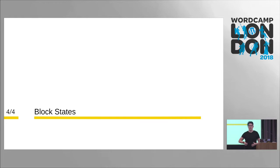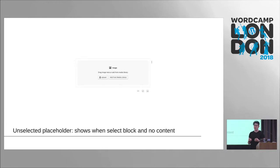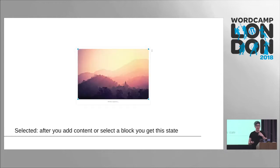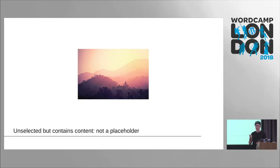When making blocks it's important to talk about the states of blocks. The unselected placeholder is when you just load a block without adding any content — for the image block, this shows an uploader as a call to action. The selected state is after you've added content and selected the block — with images you now have a way to resize. The unselected-but-filled state is when you haven't clicked on that block but it has content, looking pretty close to how it will appear on the front end.